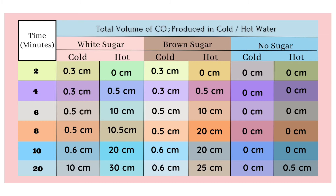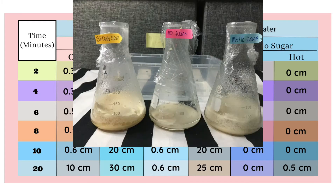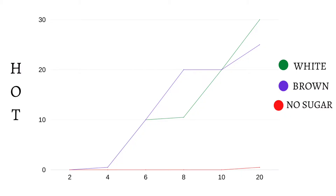I wanted to observe whether the yeast measurement would still rise, so I waited an additional 10 minutes. I got a new record: white sugar reached 30 cm, while brown sugar had 25 cm, and no sugar had 0.5 cm. The line graph shows that white sugar had the highest measurement and brown sugar had almost the same measurement as white sugar after 10 minutes, while no sugar rose a little after the 10-minute mark.